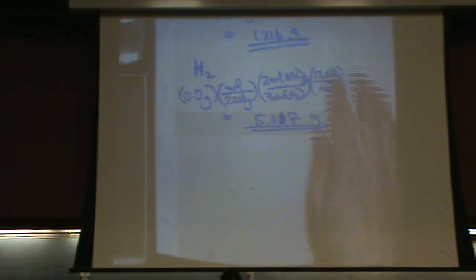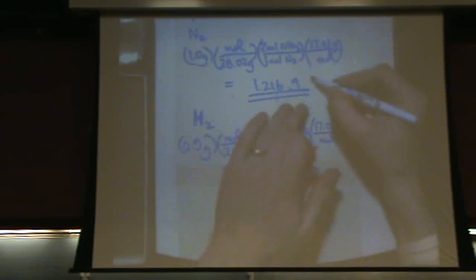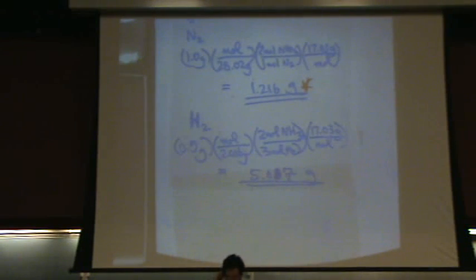Okay. So now you've got both of those two. The smaller number is your answer. And it asks you for mass of ammonia. So you're going to take the smaller number. So that means N2 is the limiting reactant. H2 is what's called in excess.